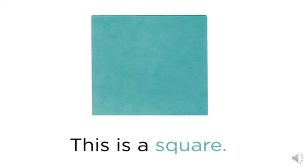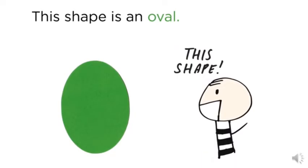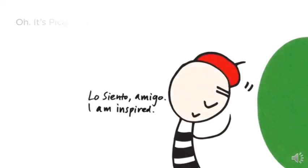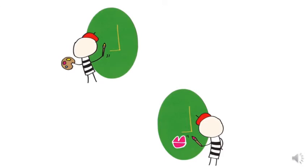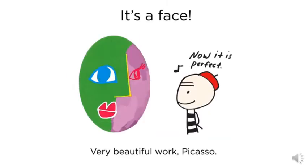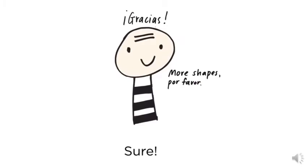This is a square. This shape is an oval. Oh, this shape. Oh, it's Picasso again. I am inspired. Lo siento, amigo. I must paint. No, no, no. This is how I paint. I start to combine all the shapes. Ta-da. It's a face. Now it is perfect. Very beautiful work, Picasso. Gracias.